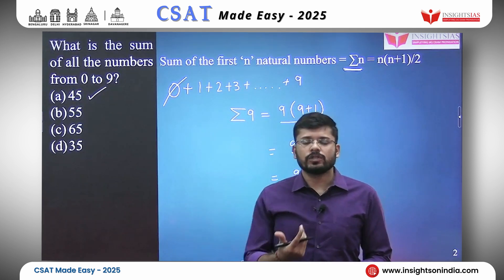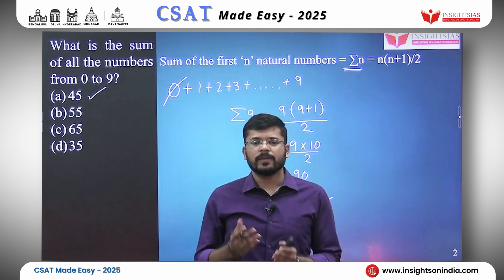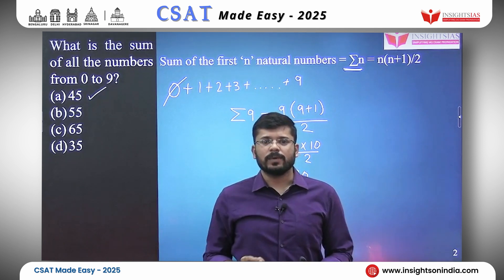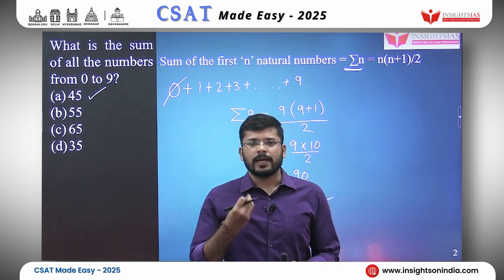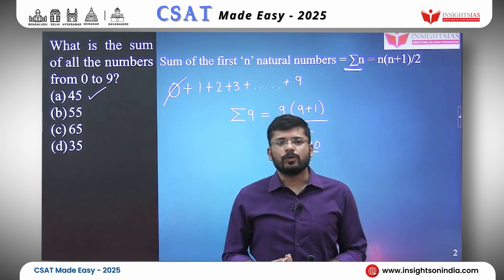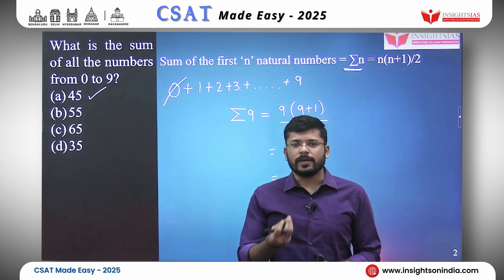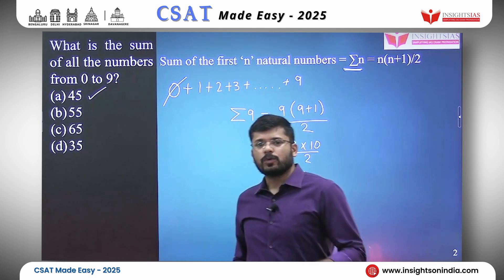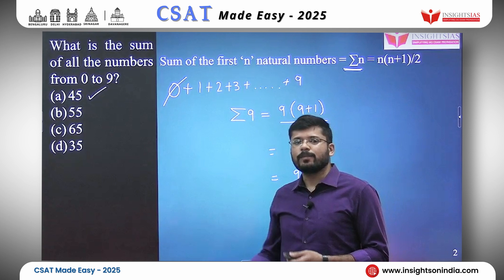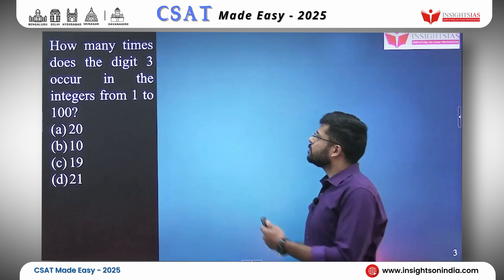The concept we learnt here is that the sum of first n natural numbers can be obtained by the formula n(n+1)/2. Let us go to the second question where we will learn another basic concept.